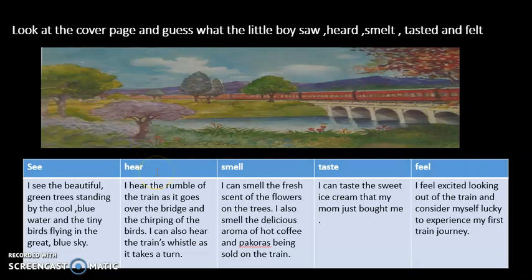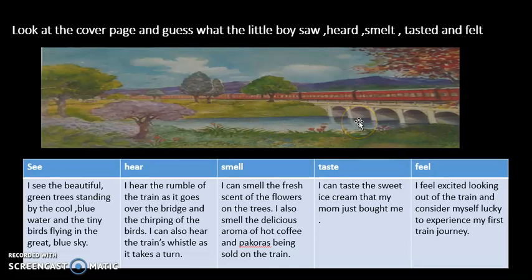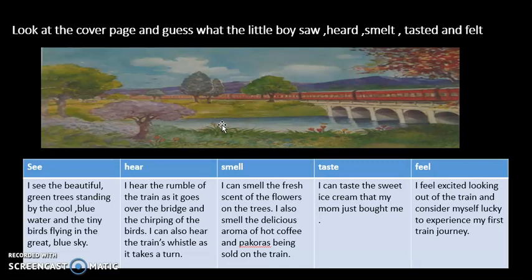Then, for hearing — what did he hear? You can write: I hear the rumble of the train as it goes over the bridge. Definitely when the train goes over the bridge, the sound is different. And you can also write about the chirping of the birds. I can also hear the train's whistle as it takes a turn. You can also say that you can hear the flowing river, or maybe there are some animals. Even though you cannot see them, you can write about them, and also the wind blowing.